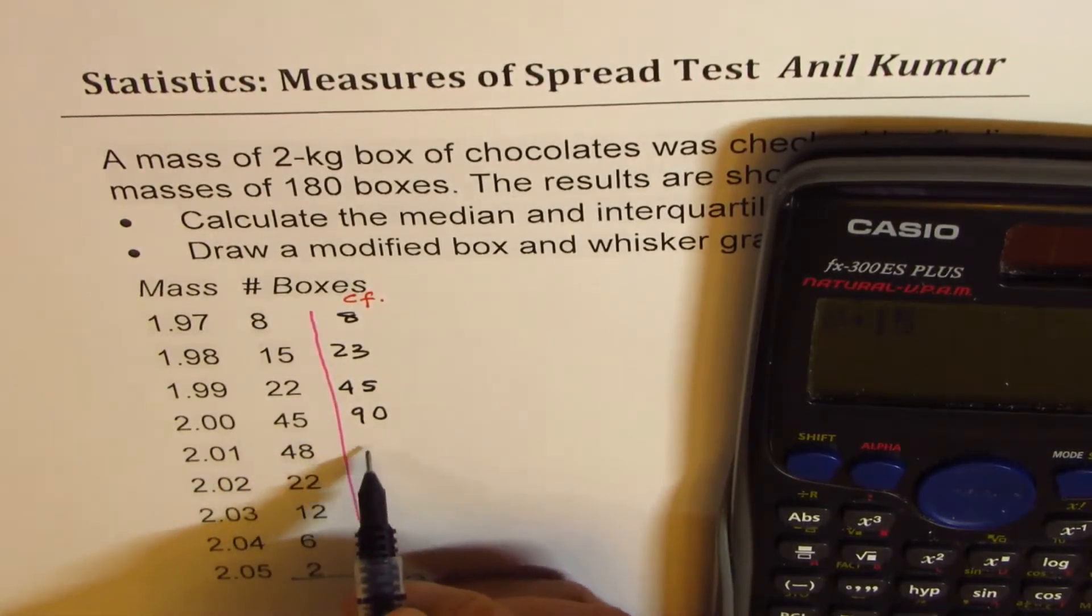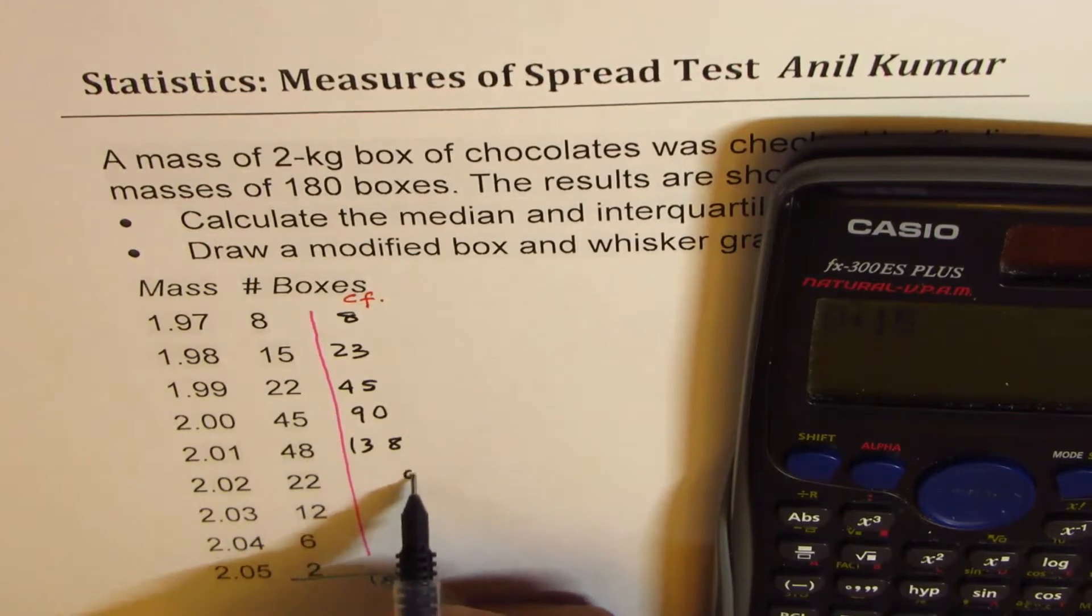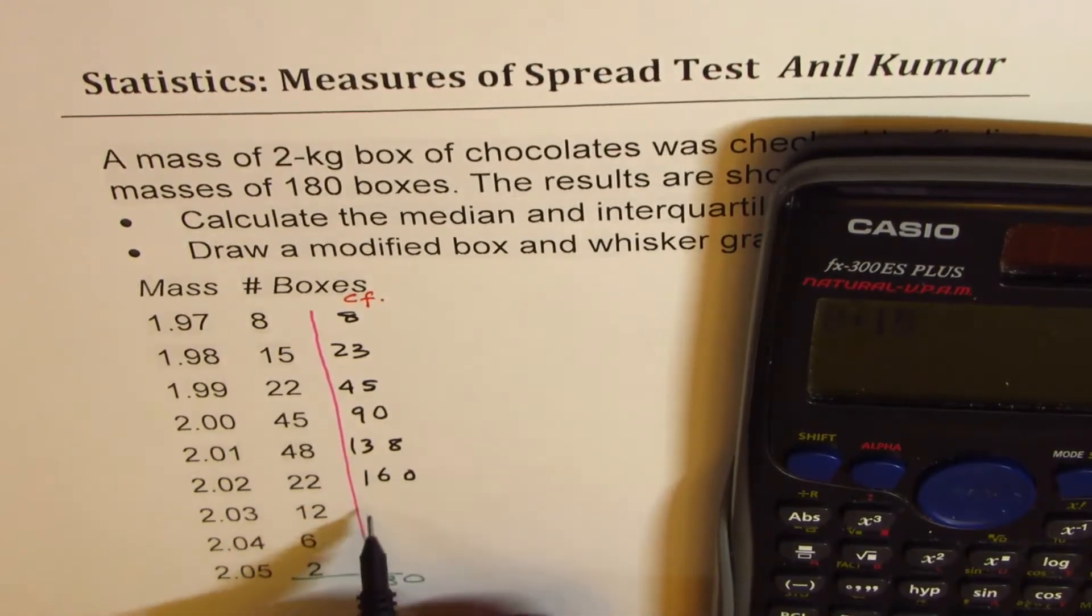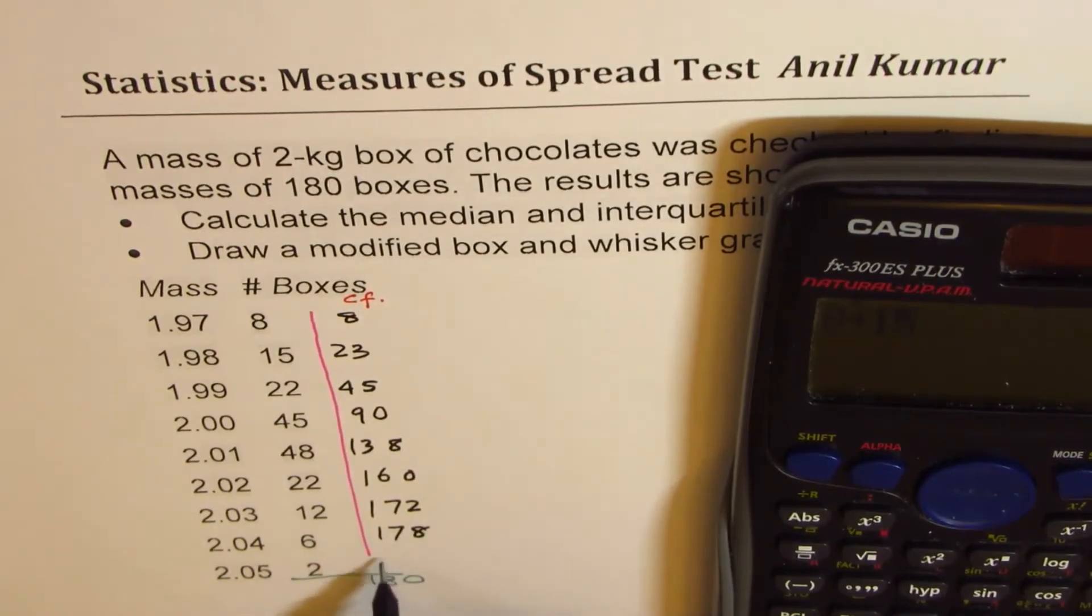So add 90 and 48, we get 138. Then 22, so 160, and then we get 172. Adding 6 gives us 178, and adding 2 as expected, 180.